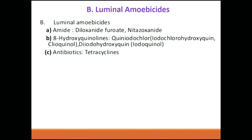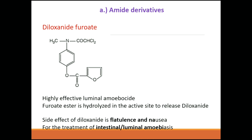The second class is luminal amoebicides, which work on the intestinal lumen — the inner lining of the intestine. There are three groups: first, diloxanide furoate; second, 8-hydroxyquinoline; third, antibiotics. Diloxanide furoate is highly effective as a luminal amoebicide. The furoate ester is hydrolyzed at the active site to release diloxanide. Side effects include nausea and flatulence. It is used in intestinal amoebiasis.